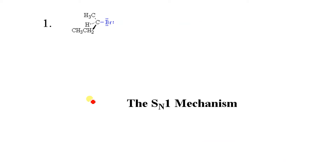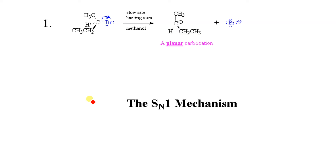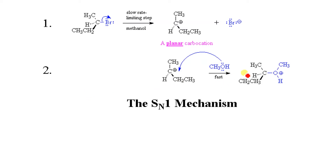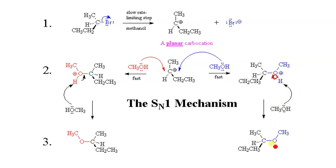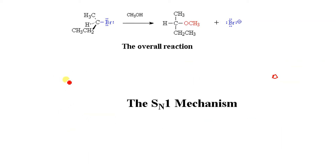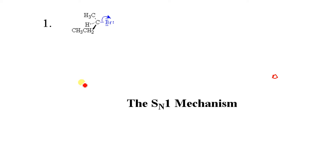In the next case, if the bond breaks on this side and the leaving group comes out, CH3OH attacks over here, this bond breaks, and CH3OH forms on this side. In the other case, CH3OH attacks from the back side and the bond forms there. That was the mechanism.